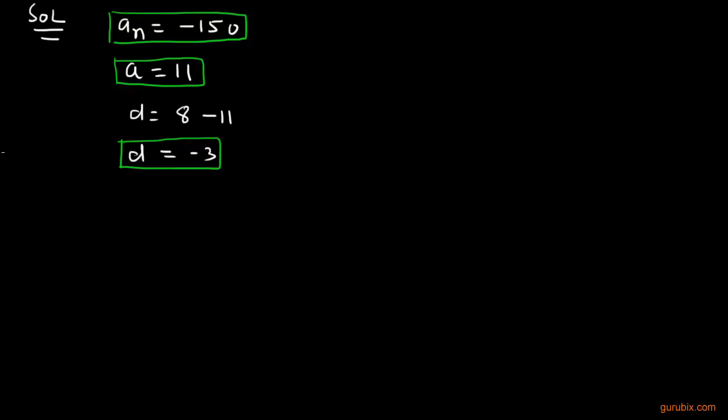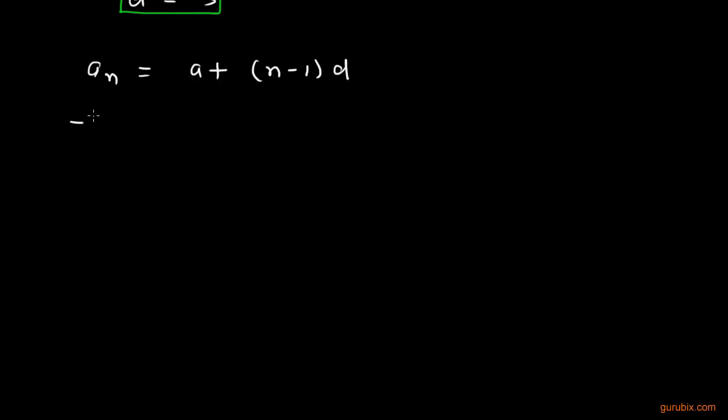General term is AN equals to a plus (n-1) into d. We shall put -150 in the place of AN and 11 in the place of a. We have to find out n and d is -3. Now we shall multiply this (n-1) by this -3. We get -3n plus 3, and here is positive 11 minus 150. We add this 11 with this positive 3, we get 14 minus 3n equals -150.